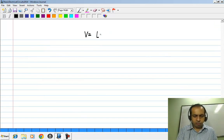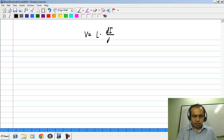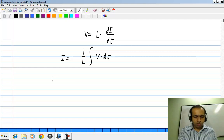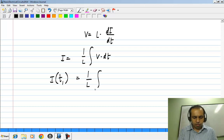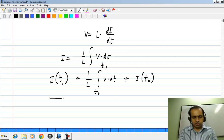We have V is L di by dt, which says that I is 1 over L integral of the voltage with respect to time, and I at a time t1 is given by this integral plus I at time t0.